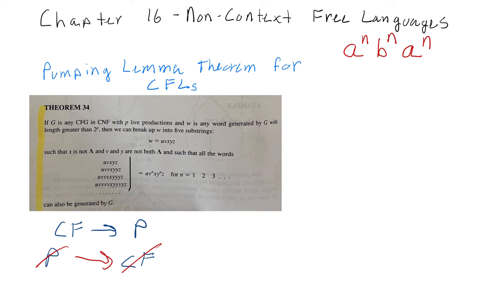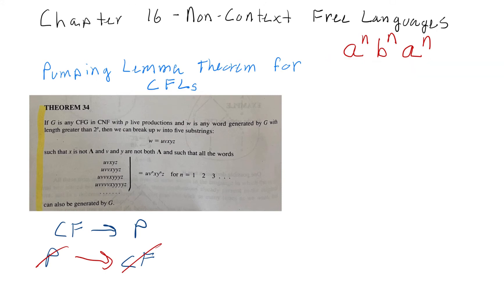You might be asking: how do I prove that a language is context-free? You just write down the grammar or create a pushdown automata that defines that language. If you can define it with a context-free grammar, then it's a context-free language. But knowing that a language is not context-free means there's no way to write down a grammar for it. Instead, you can write a proof using the pumping lemma theorem to show it is not context-free.